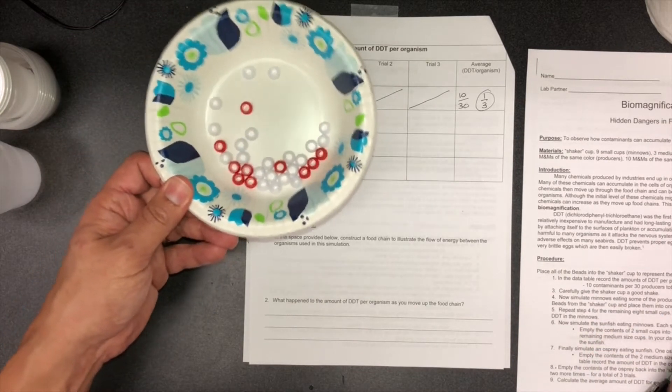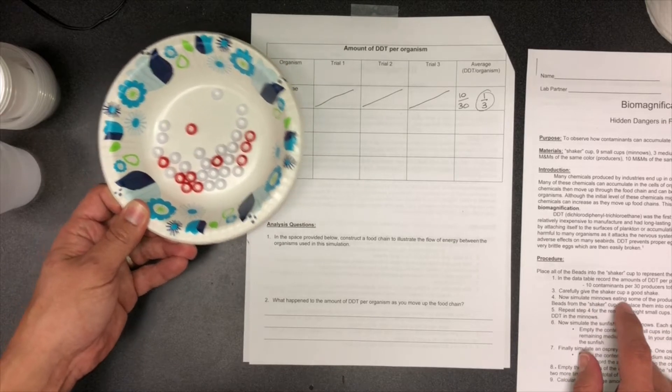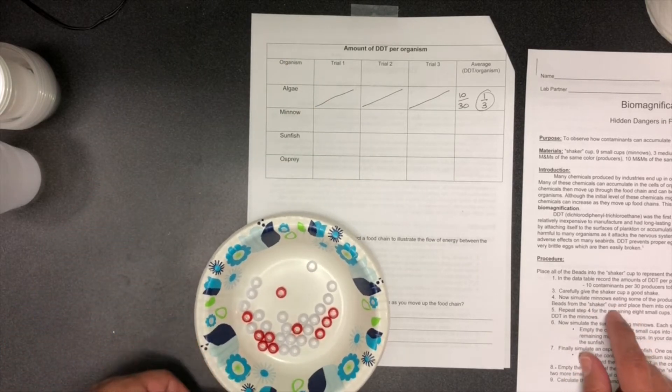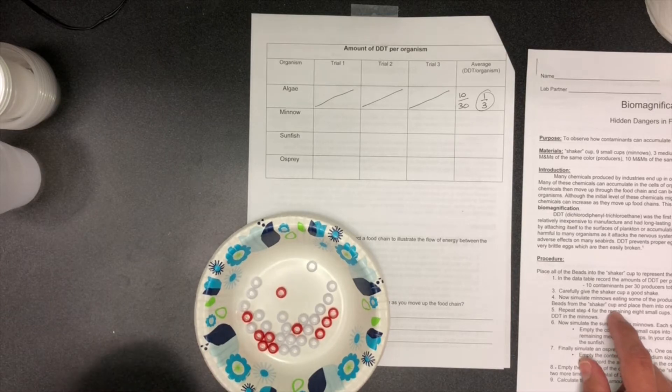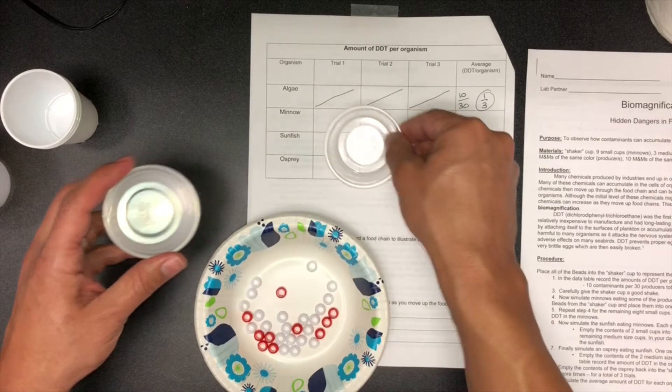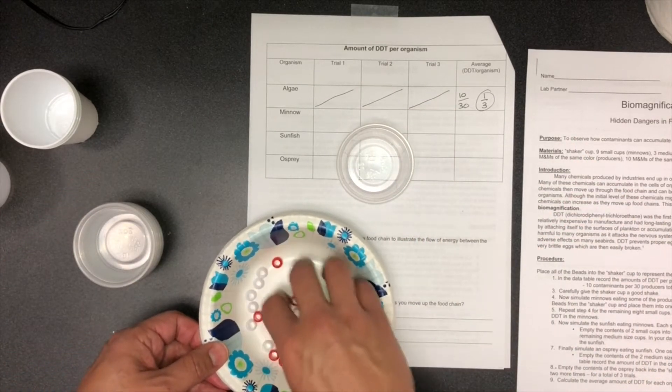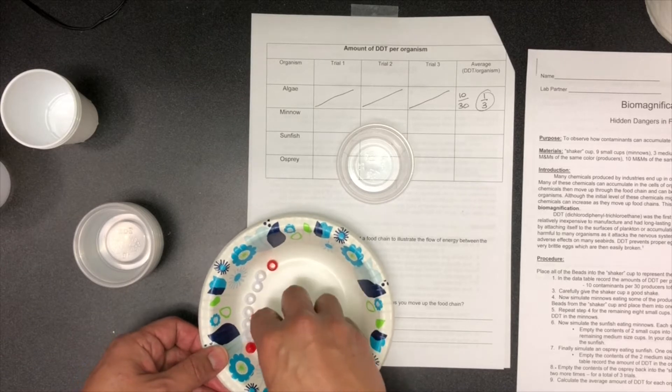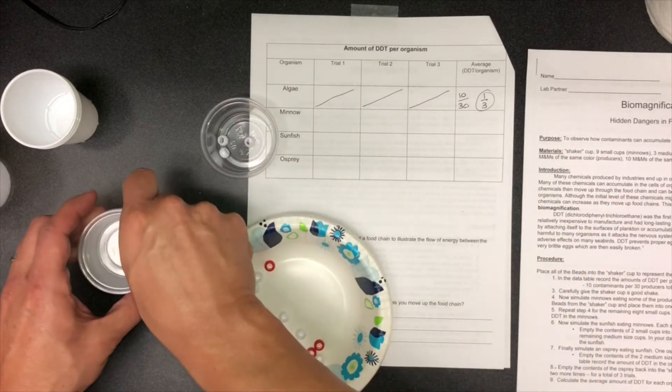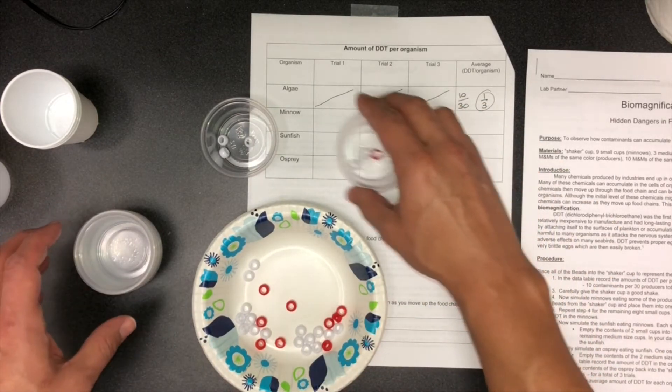Next step, number four: now simulate minnows eating some of the producers. How you do this: randomly remove three of any color beads from the shaker cup and place them into one of the small cups. You and your group members maybe just kind of look up, don't try and pick a certain color, just pick three in your fingers and drop them in. You're going to repeat that for all nine cups.